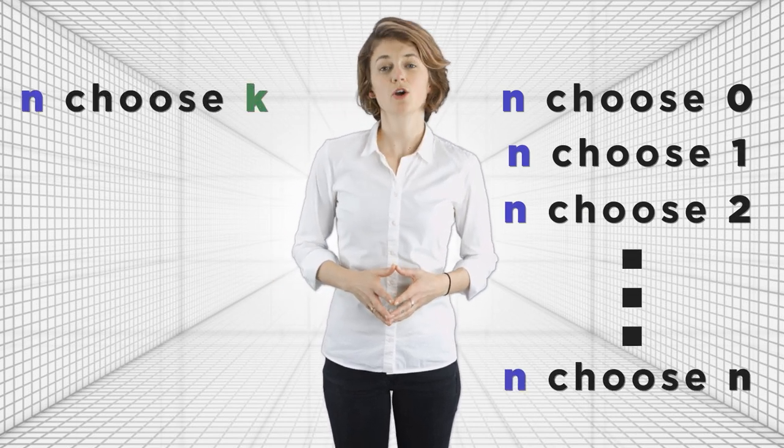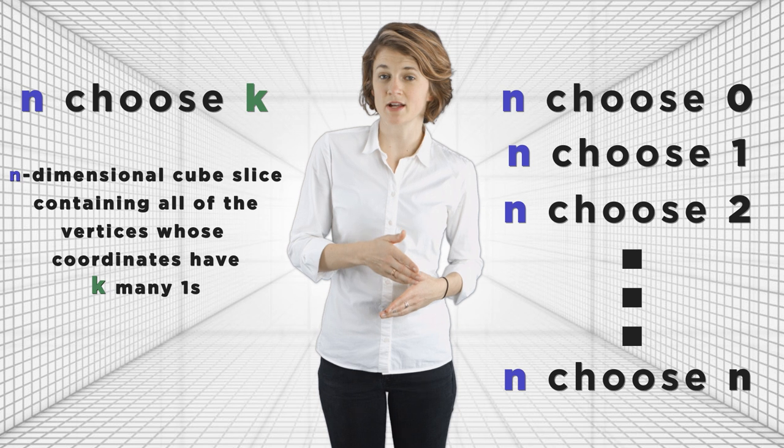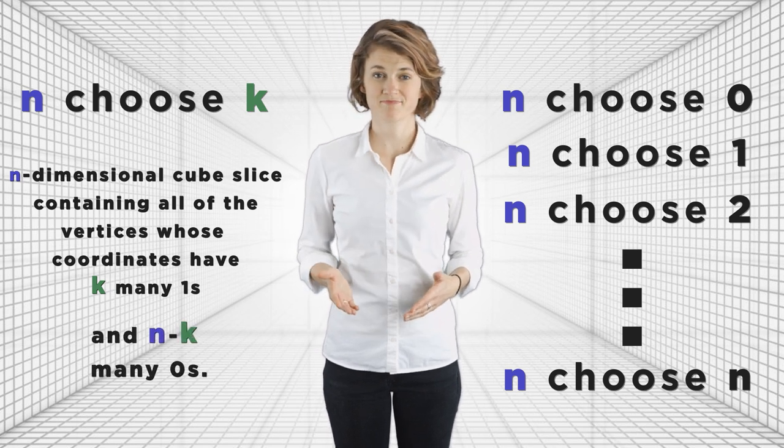The n choose k entry corresponds to the slice which goes through all the vertices whose coordinates have k many 1s and n minus k 0s. So this analogy with Pascal's triangle tells us how many vertices the kth diagonal slice of an n-dimensional cube will have. But can it also tell us what shape those vertices make? For example, we just learned the middle slice of the 4D cube has six vertices. We also know those six vertices will make some three-dimensional object since it's a 3D slice of a 4D cube. But there's a lot of ways to arrange six vertices in three dimensions, like this or this. How do we know what shape they make?